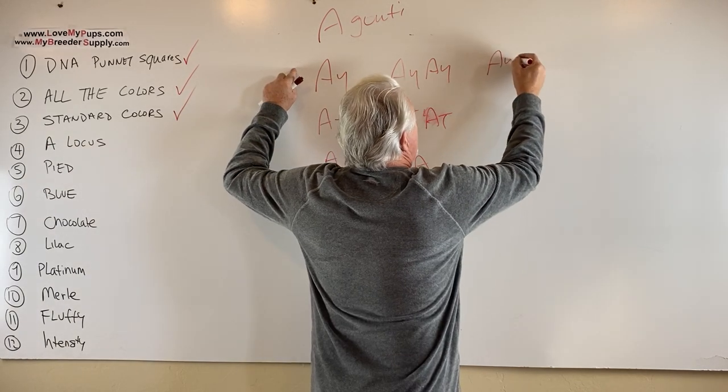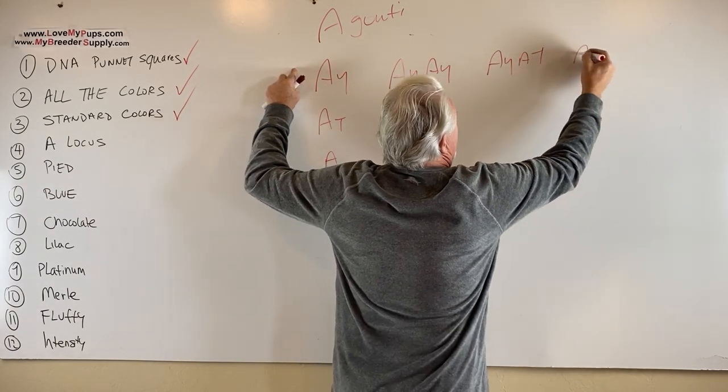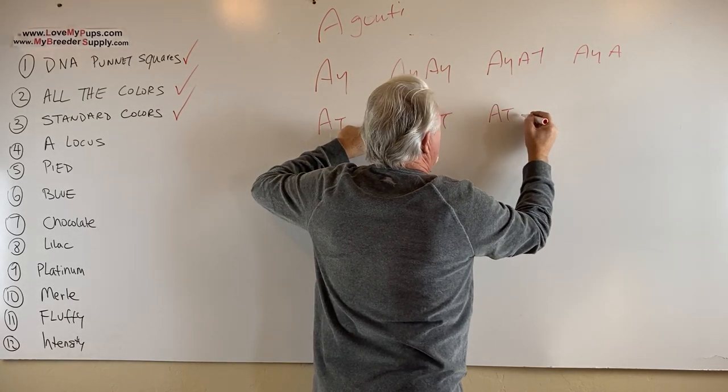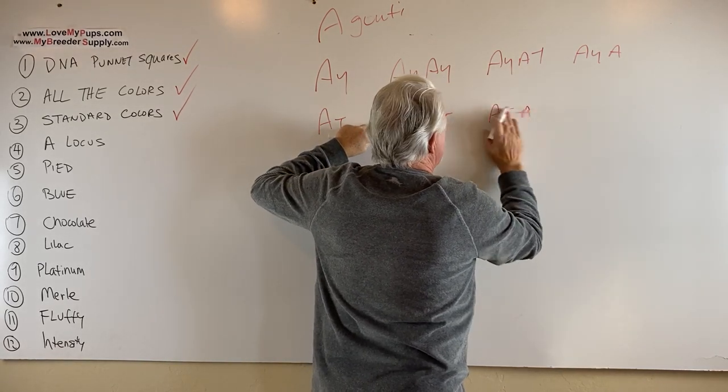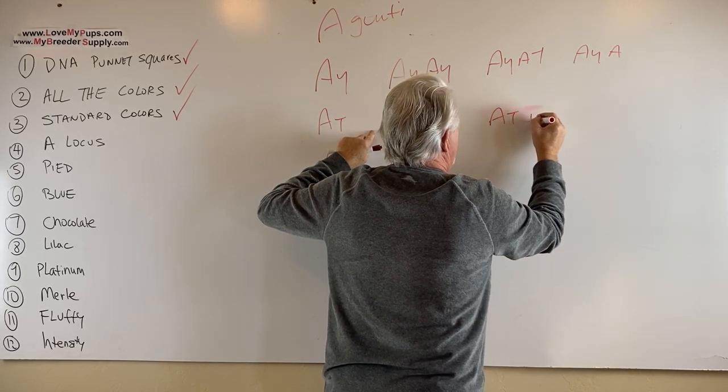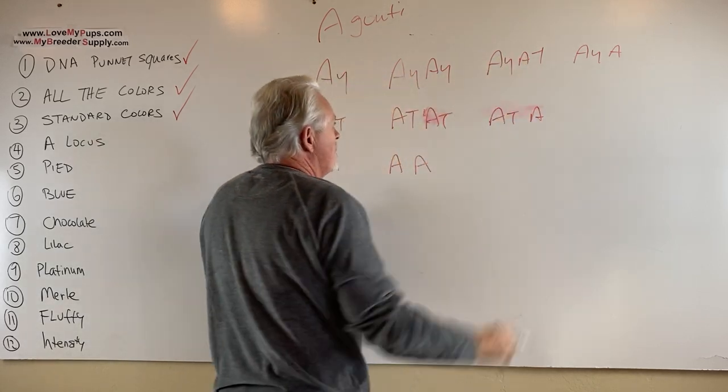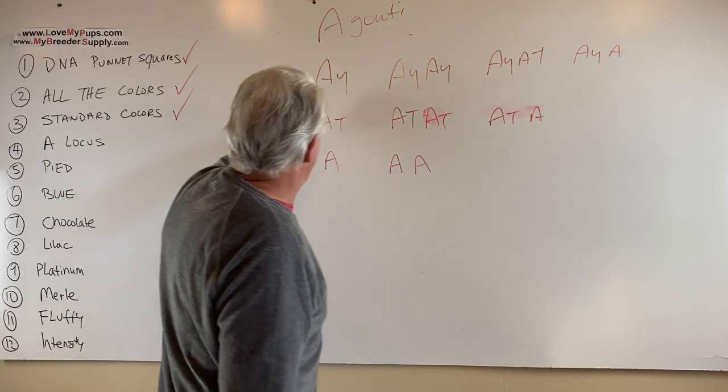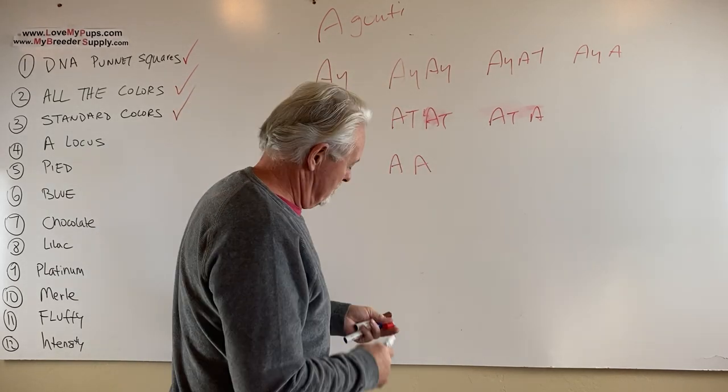It could be AYAT, it could be AYA. This one here could be ATAT, which already did, or it could be ATA. And this one here, so we've got all the possible combinations that you could have on the board now.